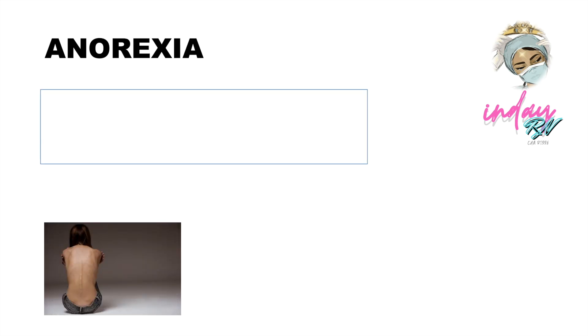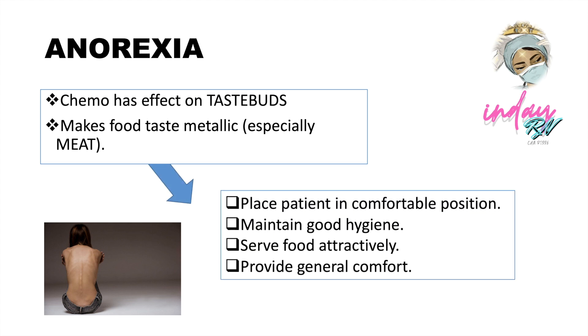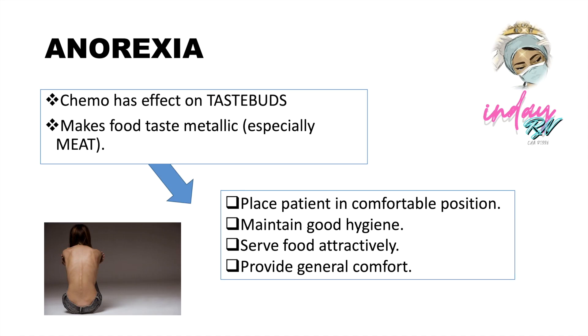The next side effect is anorexia, which is common in chemotherapy because chemo has an effect on taste buds — chemotherapeutic agents make food taste metallic, especially meat. If the patient is suffering from anorexia, place them in a comfortable position during eating, maintain good hygiene, serve food attractively, and provide general comfort. In nursing examinations, you can apply Maslow's hierarchy of needs — anorexia affects the physiologic needs of the patient.